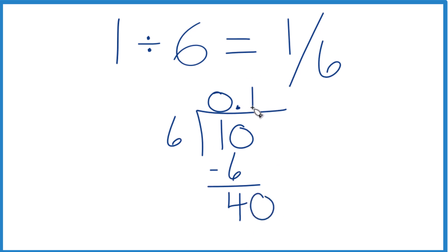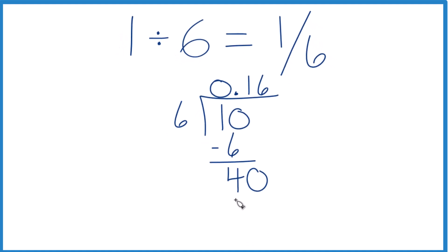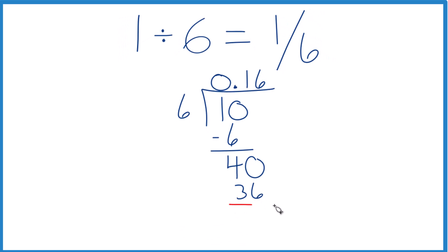6 times 7 is 42. That's too much. How about 6 times 6? That's 36. We subtract and we get 4.